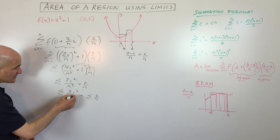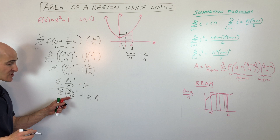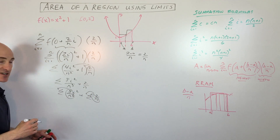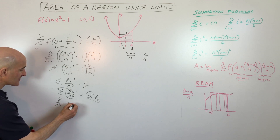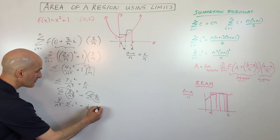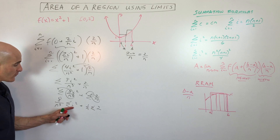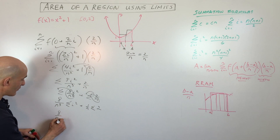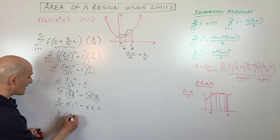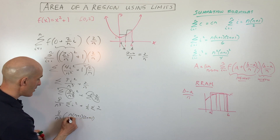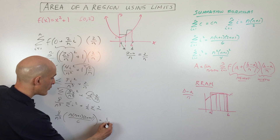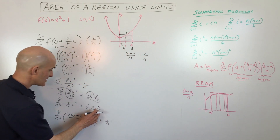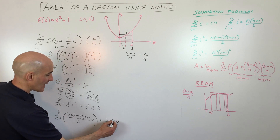We bring the eight over n cubed in front of the summation since it's a constant — n is just the number of rectangles. Same thing on the other side, we bring the one over n in front. So we have eight over n cubed times the sum of i squared, plus one over n times two. Using the summation formula, the sum of consecutive squares gives us n times n plus one times two n plus one, all divided by six. For the sum of a constant, that's just two times n, which simplifies to two.